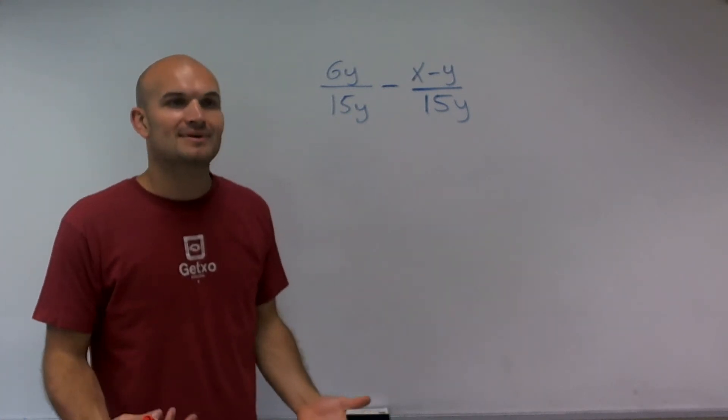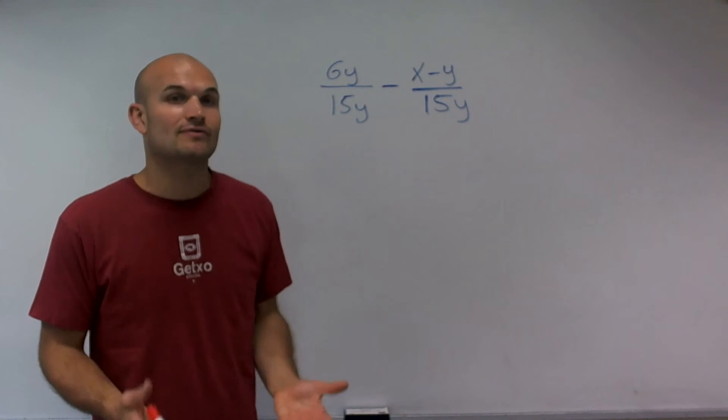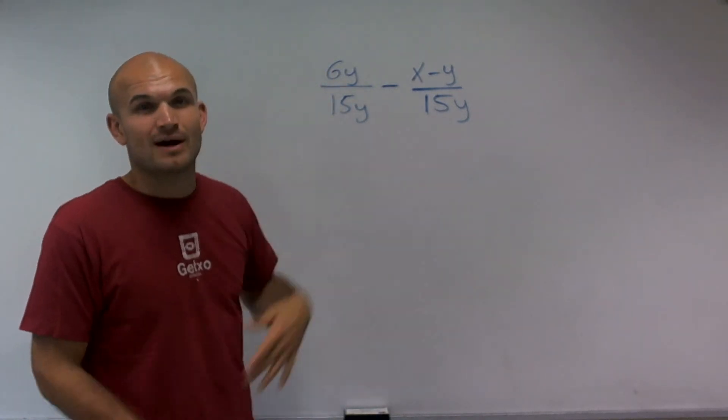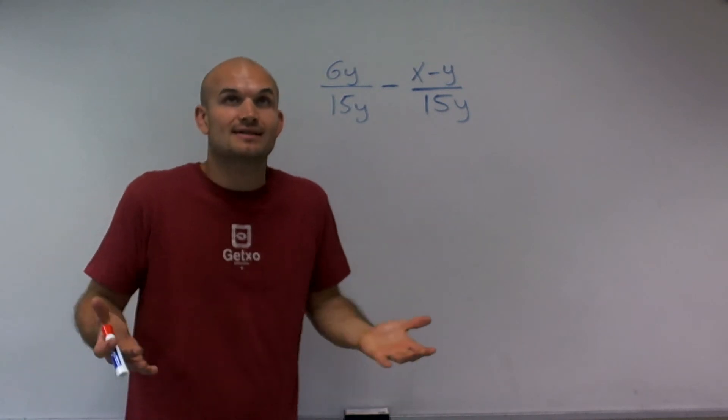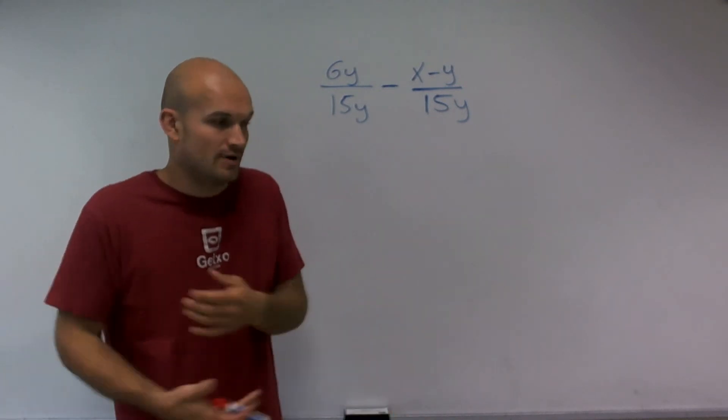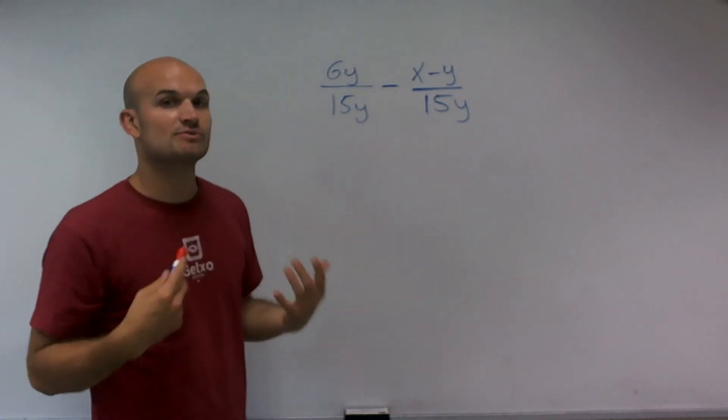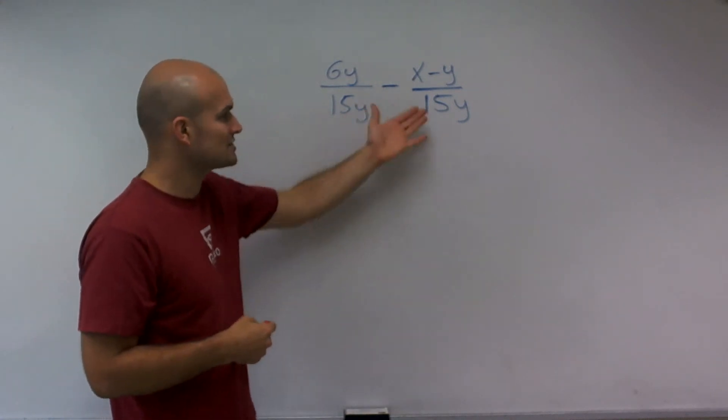So usually our case when simplifying is to do whatever you can to simplify. You see I have a fraction here, 6y divided by 15y, and it's probably your intuitive thing to think, oh well, let's reduce that fraction, right? Well, that's a good idea, but notice I have an operation of subtraction, and I have two rational terms.